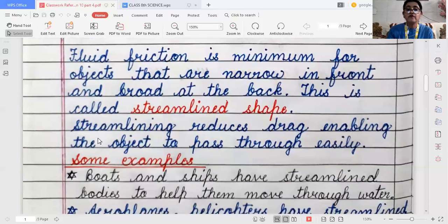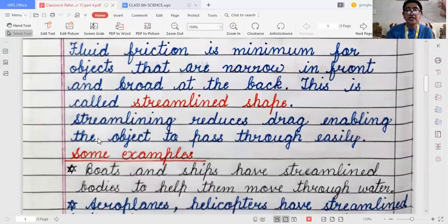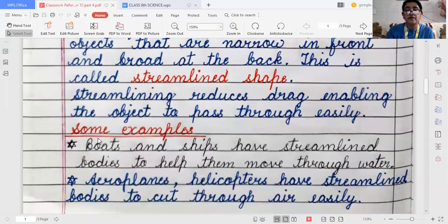Now we will see few examples. The ships and the boats, they all are having streamlined bodies to help them move through the water. In the same manner, aeroplanes and helicopters have streamlined bodies to cut through air easily.